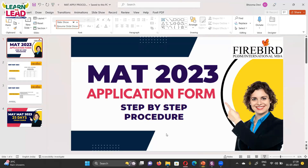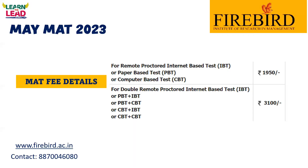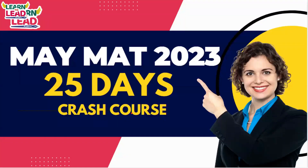To recap the MAT 2023 fee details: if you take a single test — IBT, PBT, or CBT — the fee is $1,950. If you take the double remote option (two tests), you can combine PBT and IBT, PBT and CBT, CBT and IBT, or two CBTs. The cost for two tests is around $3,100.